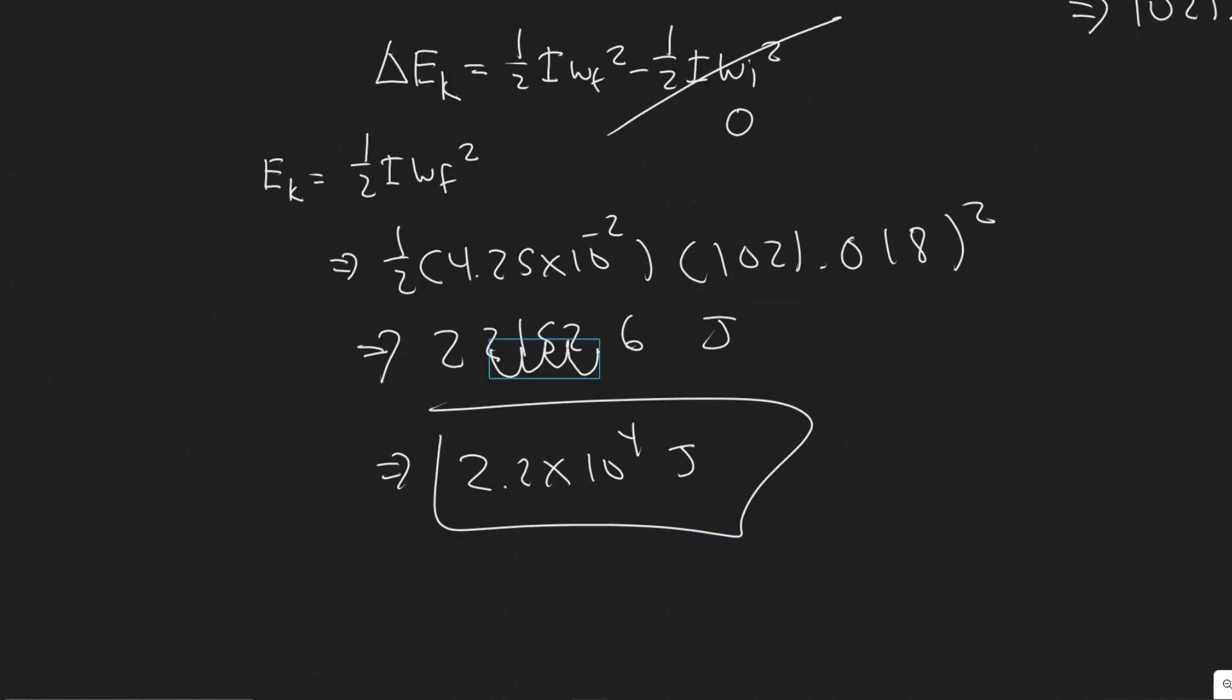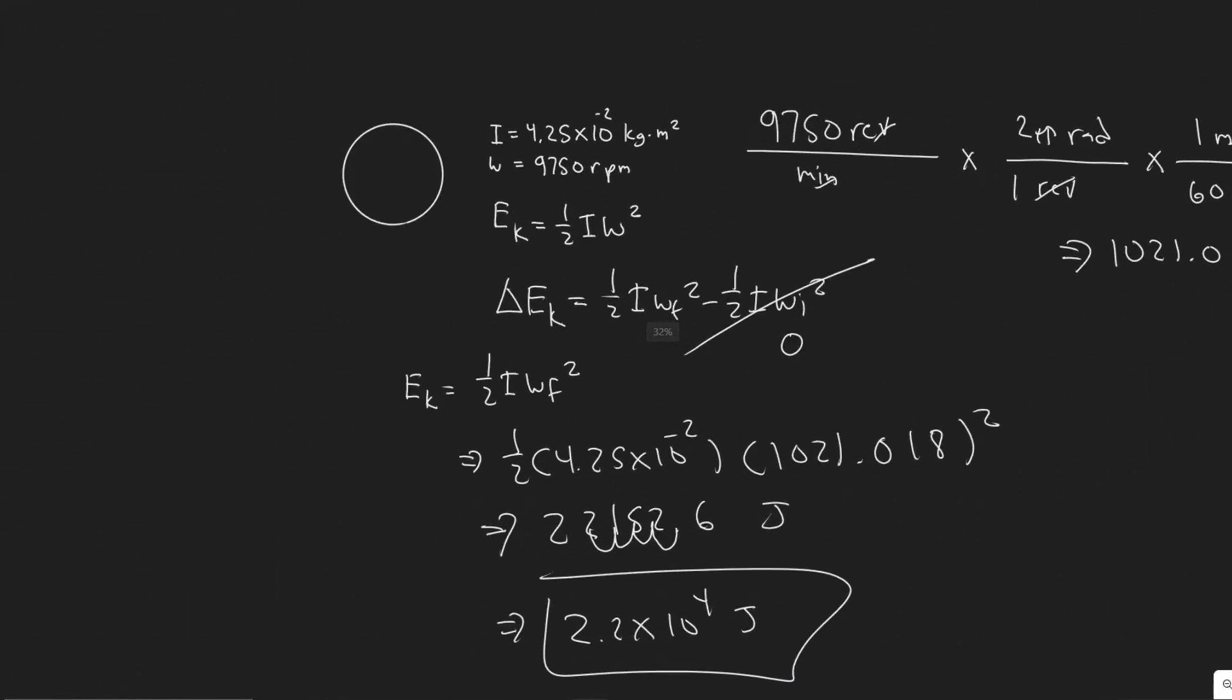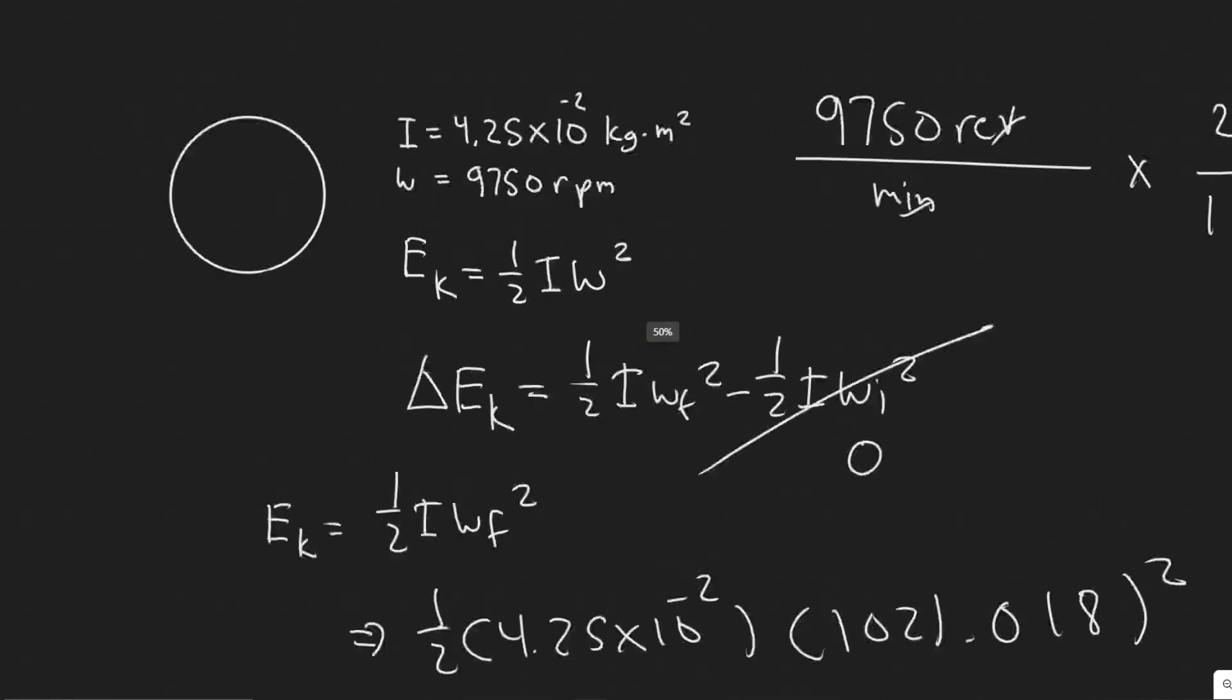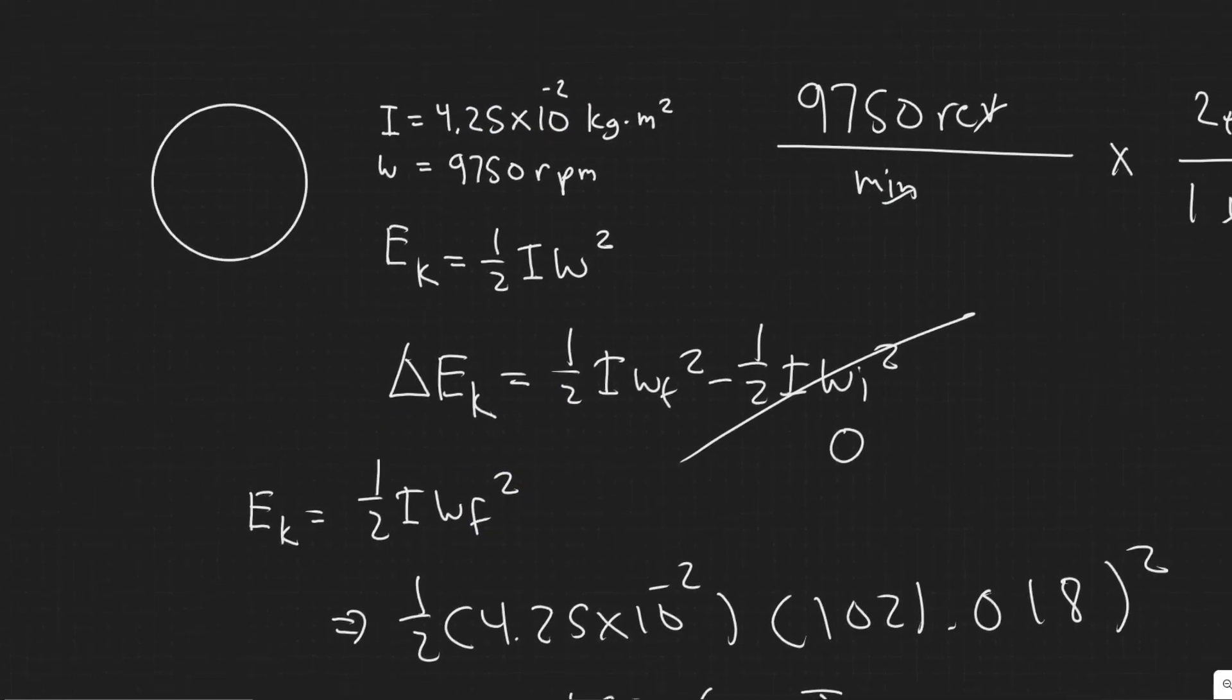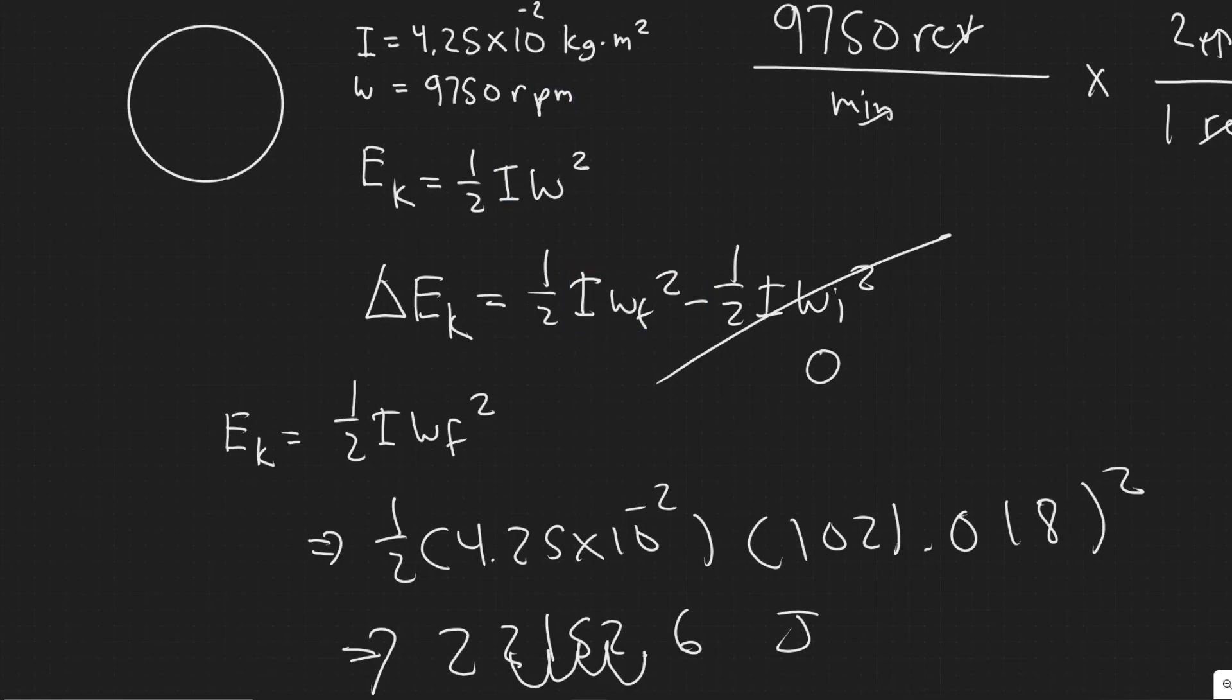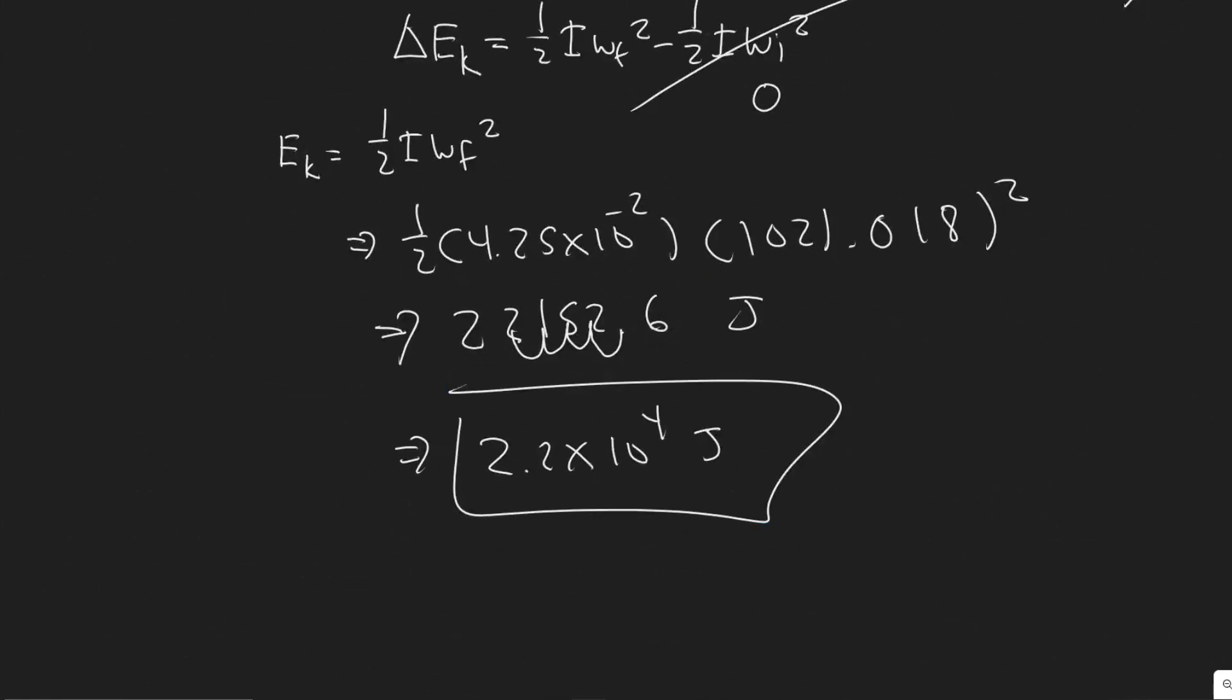So 2.2 × 10⁴ joules - that's how much energy it takes to get from 0 RPM to 9,750 RPM with this specific inertia. The main takeaway is the formula for rotational kinetic energy, and make sure you're in the correct units when you do it. That's your answer: 2.2 × 10⁴ joules. Hopefully you found this video useful.